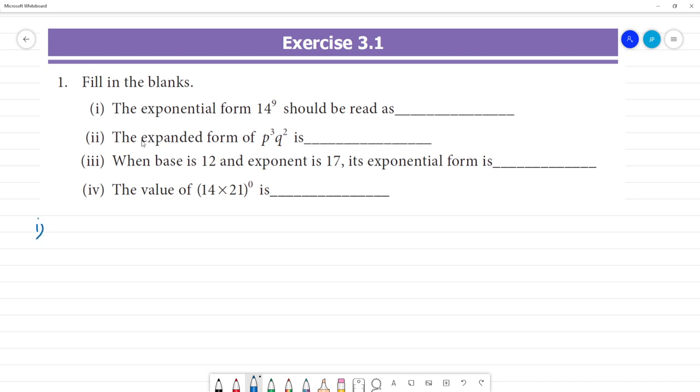First one, the exponential form 14 to the power 9 should be read as. If we have 14, 9 is there, we can read, how we can read. If we say 14 to the power 9.